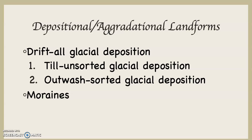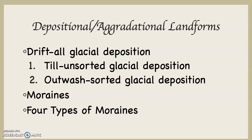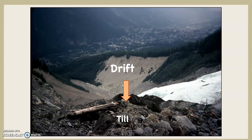A moraine is a hill composed of till that's formed along the edges of a glacier. For our purposes there are four types of moraines: the terminal moraine, recessional moraines, lateral moraines, and medial moraines.